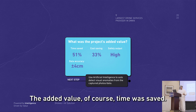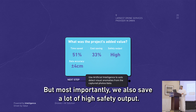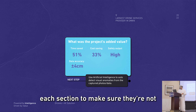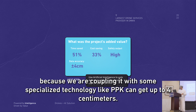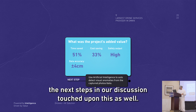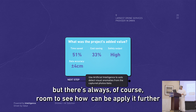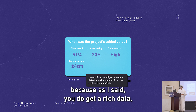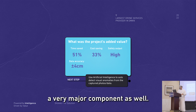The added value: we saved around 51% of the time, we saved cost, and importantly there was a significant safety benefit — operators no longer need to physically inspect each section. Data accuracy, because of coupling with PPK technology, can get up to four centimeters. Some of the next steps, as the panel discussion also touched upon, is using AI. We do use AI to accelerate data processing, but there's always room to employ it further, because processing rich data effectively and drawing conclusions is a very major component.